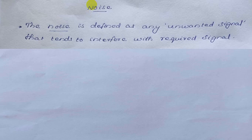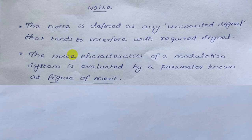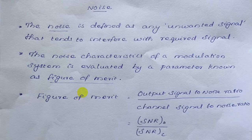Noise is any unwanted signal that interferes with the required signal. The noise characteristics of any modulation system is evaluated by a parameter known as figure of merit. Figure of merit is related with signal to noise ratio. If the signal to noise ratio is high, it means the signal power is more compared to the noise power, and then it will be a good system.